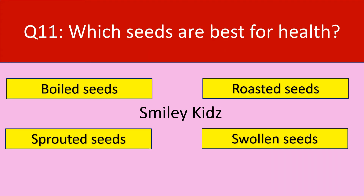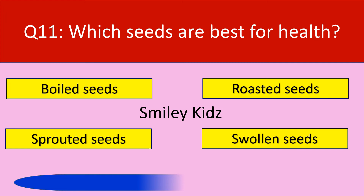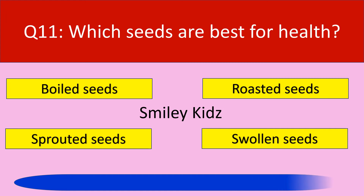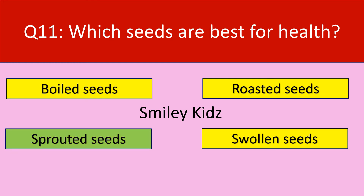Question number 11. Which seeds are best for health? Options are boiled seeds, roasted seeds, sprouted seeds, and swollen seeds. Your time starts now. The correct answer is sprouted seeds. Sprouted seeds are best for health.